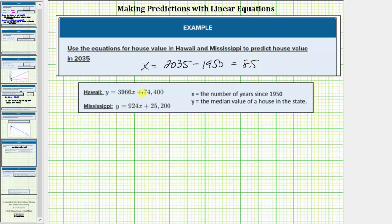So if we substitute 85 for x in both equations, we can determine the predicted median home value in each state. Let's first consider Hawaii.